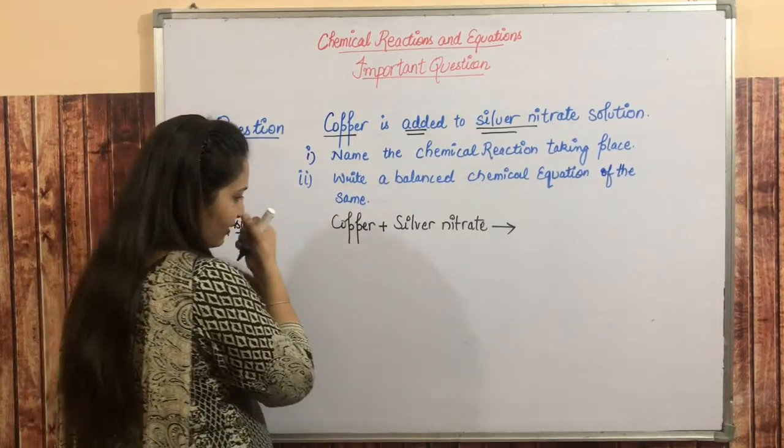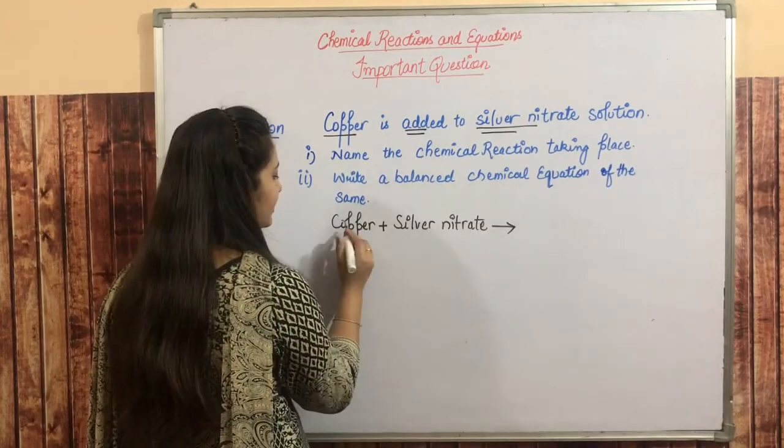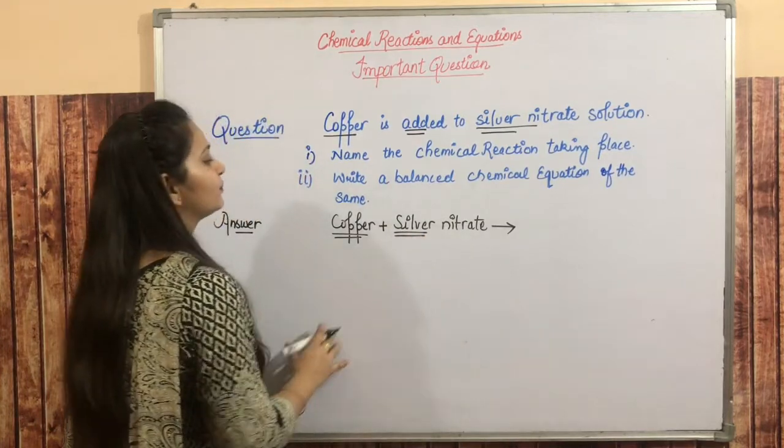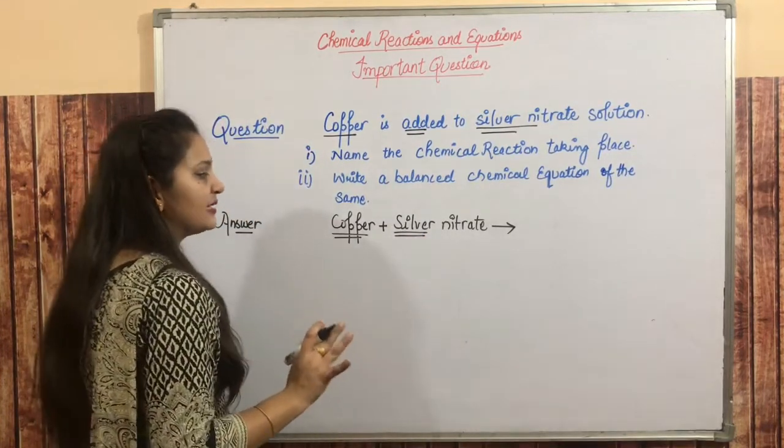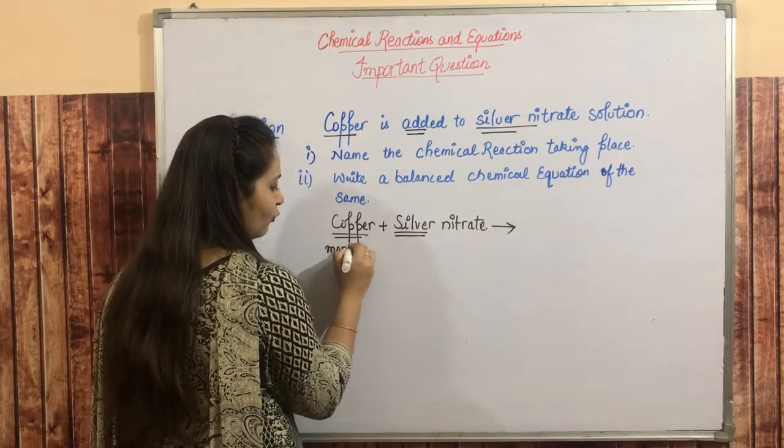So what we have now is copper and silver nitrate. Now see, here are two elements—one has copper and one has silver. So as per the activity series, copper is more reactive.